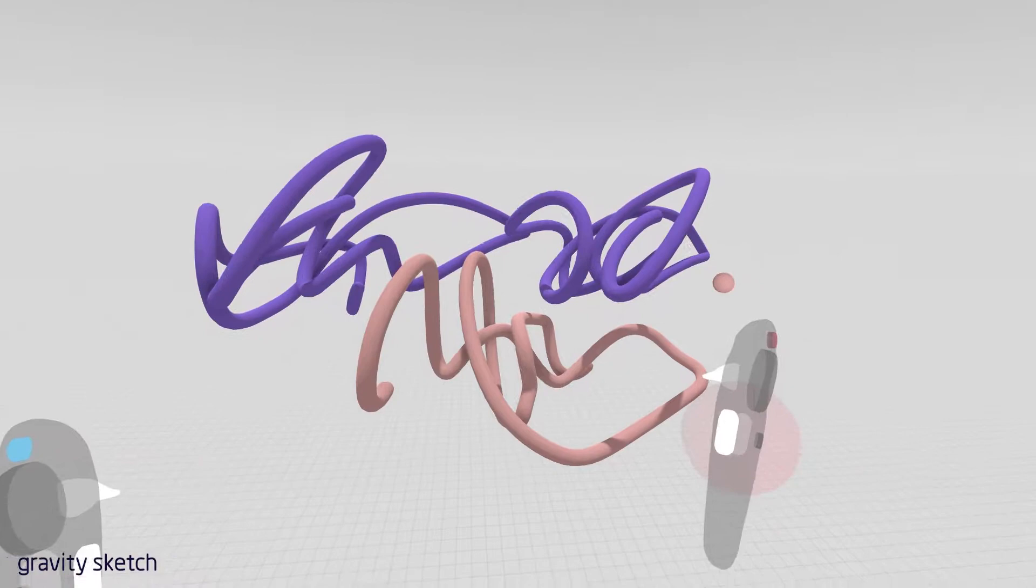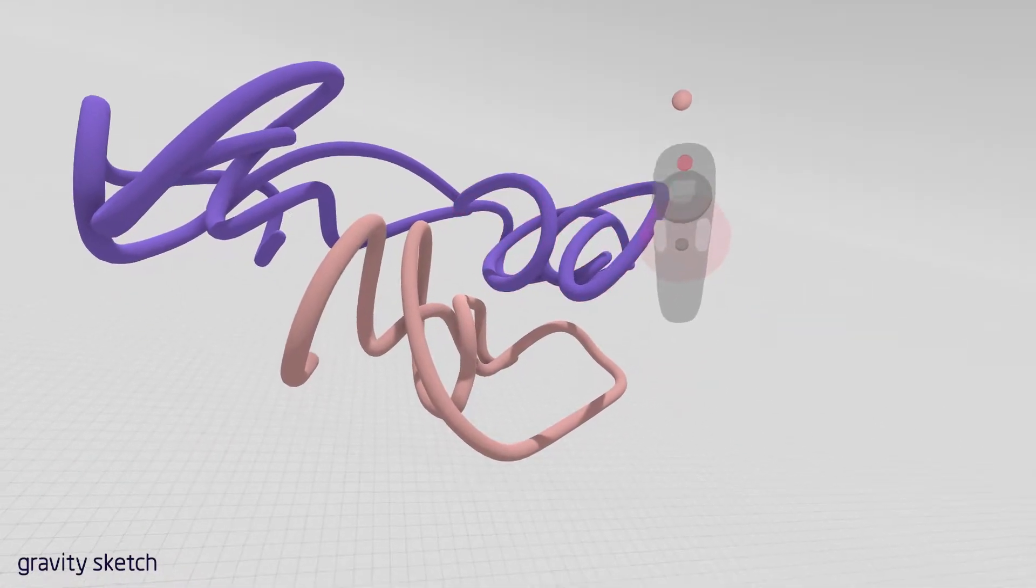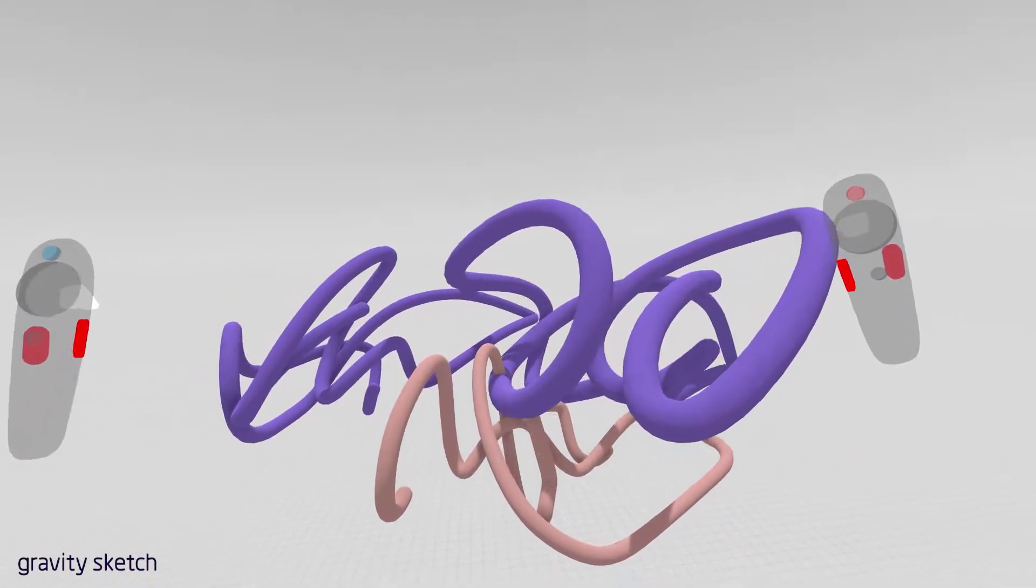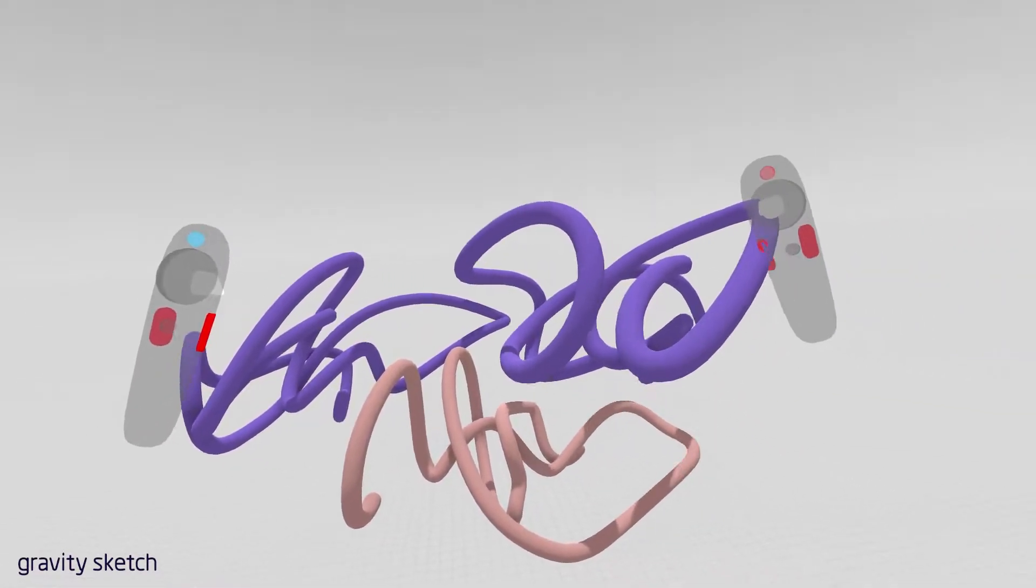You can also scale individual strokes by intersecting the stroke with the transparent red sphere, grabbing it, and then with your non-drawing hand, as you're holding it, squeeze and grab with those grips.